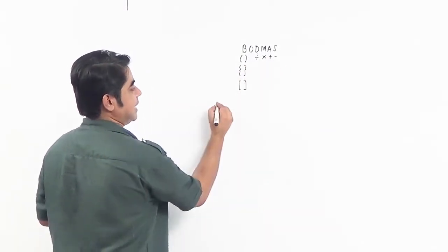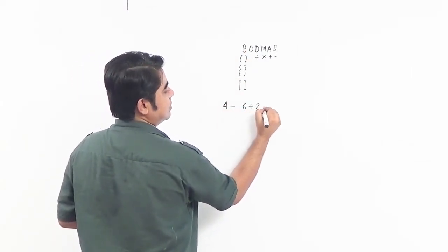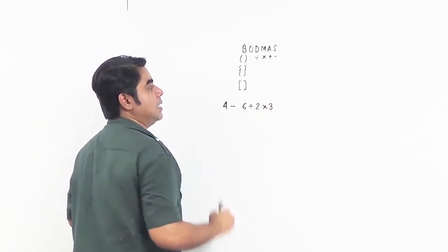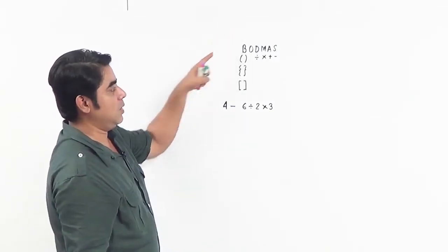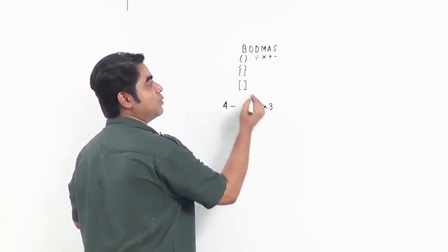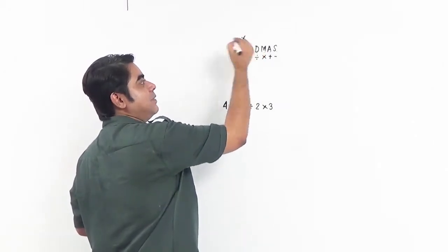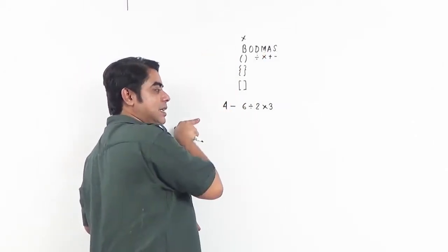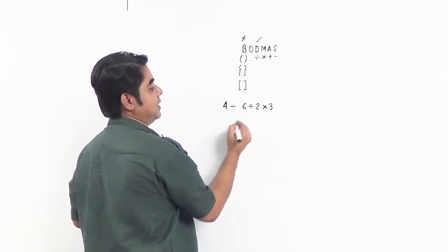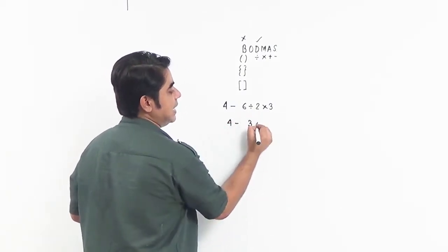Let us take an example. Let us have an expression like this. Whenever we are using this rule, we will scan the expression from left to right. Do we have a bracket? No, we don't have a bracket — that is the first thing we check for. Next, do we have a division? Yes, we have a division. Do the division first. So it is 4 minus 6 divided by 2, which is 3, into 3.